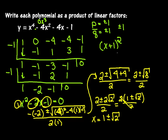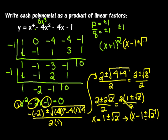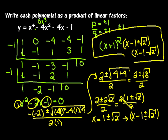To write it as linear factors, I have x minus one plus or minus the square root of two. That gives me two factors: x minus one plus the square root of two, and x minus one minus the square root of two. And so this is my product of linear factors. That was a lot of work, but it was kind of fun.